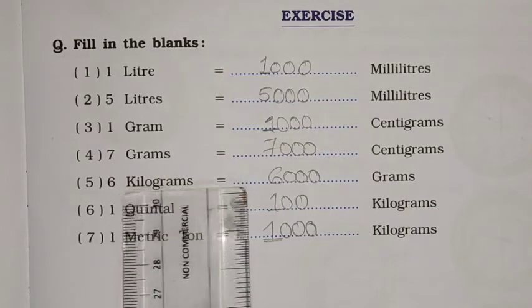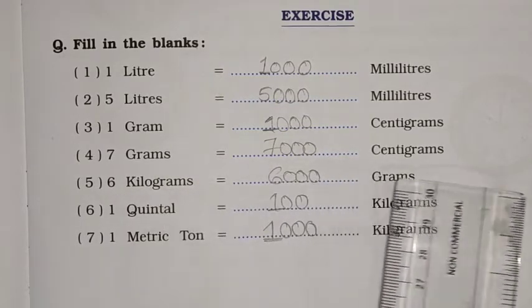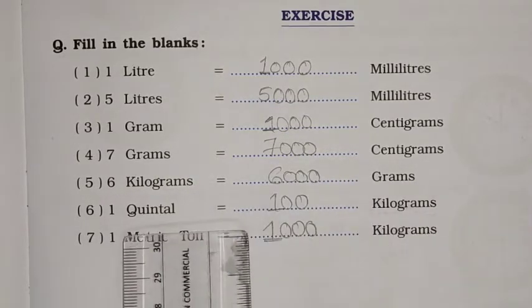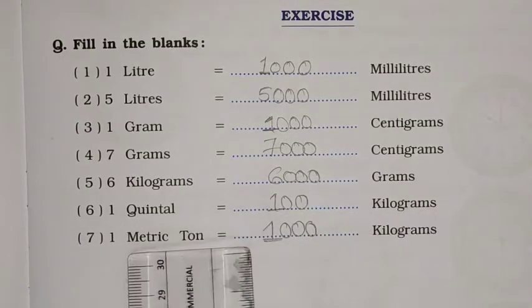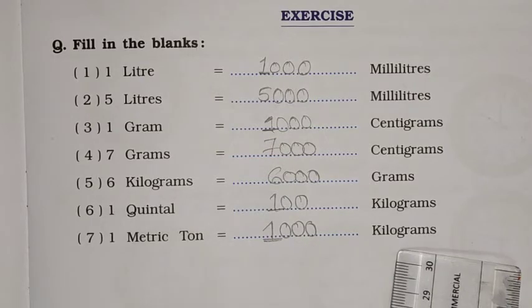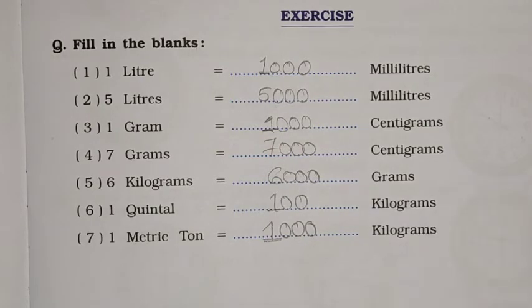then you need to increase. 6 kg is equal to 6000 grams, 1 quintal is equal to 100 kg, 1 metric ton is equal to 1000 kg. This will be completed in textbook.